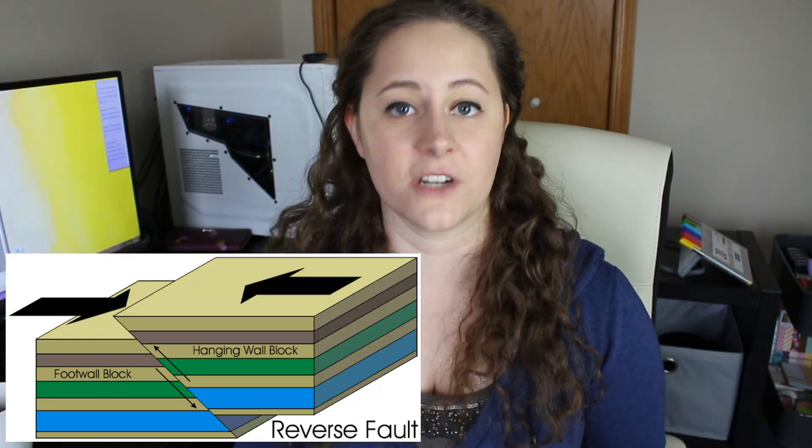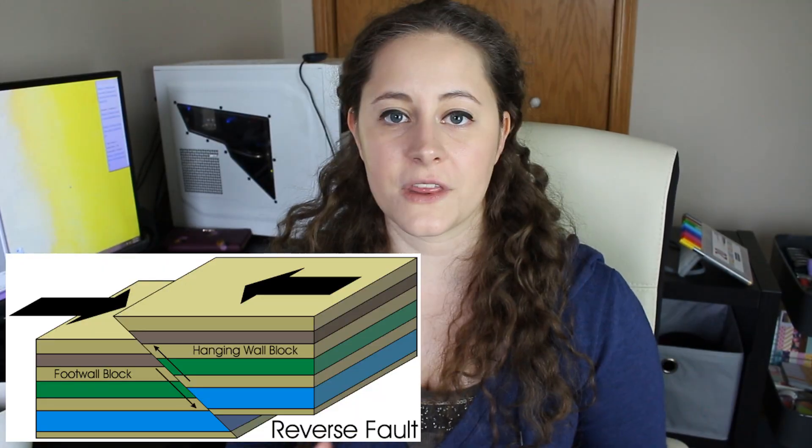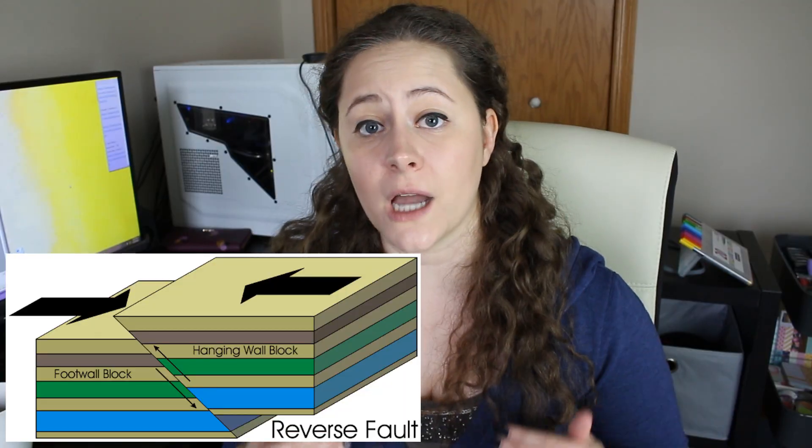A reverse fault is, just like the name suggests, moving reverse to what we think gravity should be making it do — the hanging wall is actually moving up. That is really all that determines whether it is a normal or reverse fault: the direction of these two blocks. It is important to know which kind of fault you are dealing with, because then you can determine all sorts of other things. If you know what kind of fault you are dealing with, you will understand the tectonics or the faulting and pressure of the area a lot easier.